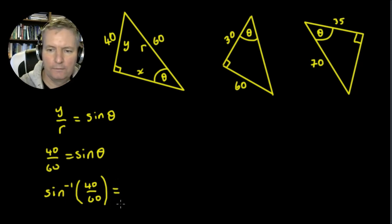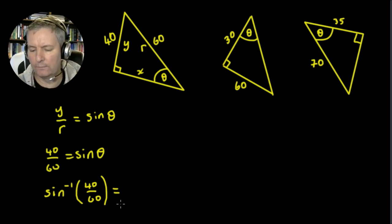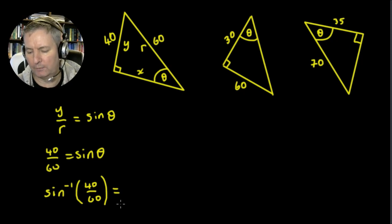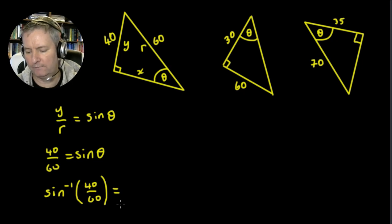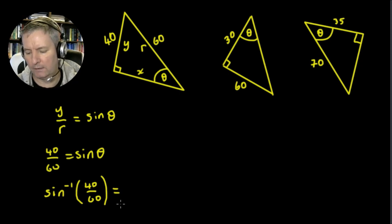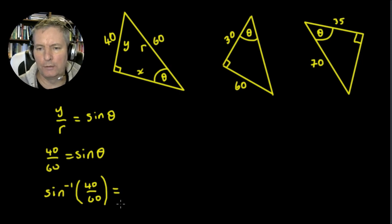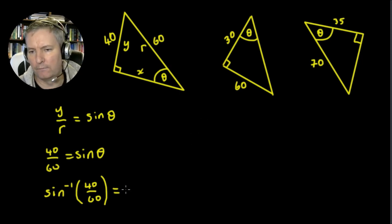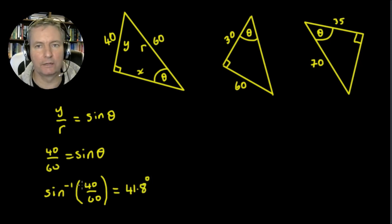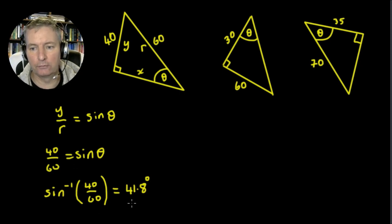Put that in your calculator — remember to be careful with the brackets. You'll need to use shift sine, open the brackets, enter 40 divided by 60, then close the brackets. I get an angle of 41.81 degrees, so let's call that 41.8 degrees.